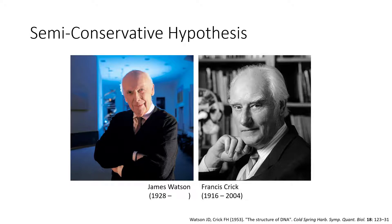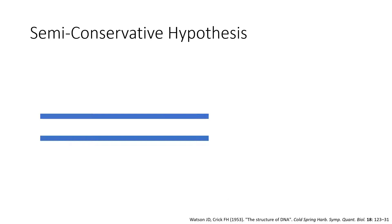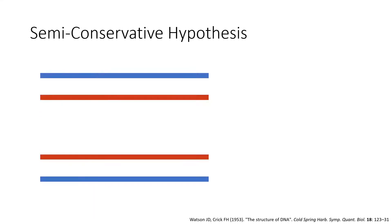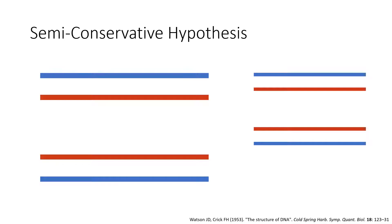The semi-conservative hypothesis was raised in 1953 by James Watson and Francis Crick, the two scientists credited with discovering the structure of DNA. The hypothesis was raised in the publication on the findings of the DNA structure. The parental DNA molecule splits into two strands and each strand is used as a template for synthesis. In the semi-conservative hypothesis, each daughter DNA molecule has one strand of parental origin and one strand that is newly synthesized.